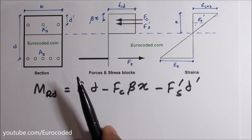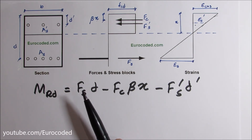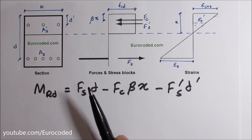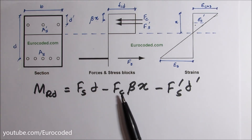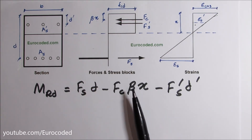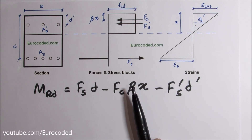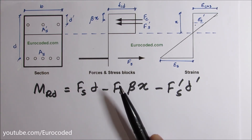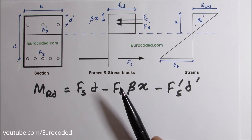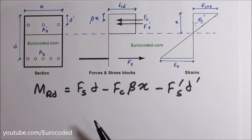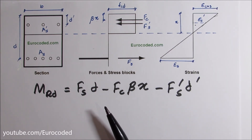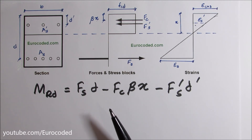If all of the reinforcement does not yield, then the strain compatibility method must be used to calculate the ultimate moment resistance. We have done a video on calculating the bending resistance of a reinforced concrete T-beam using the strain compatibility method — the link will be in the description box below. Thank you for watching; please like and subscribe to our channel.